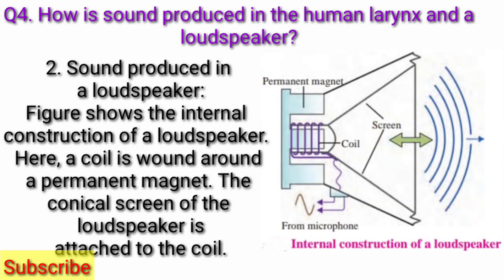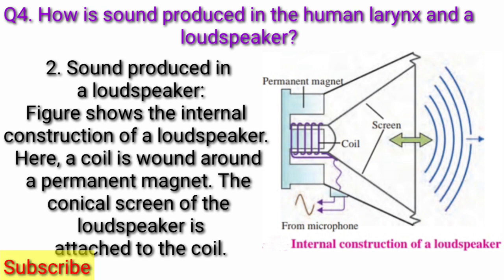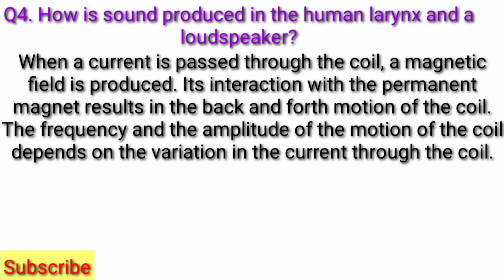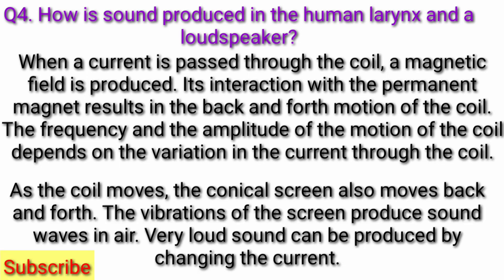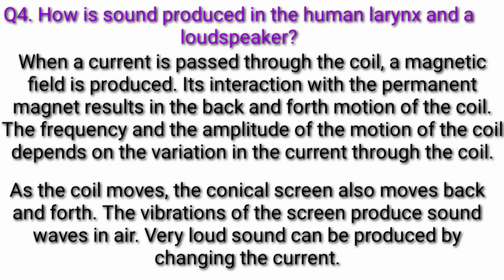Sound produced in a loudspeaker: A figure shows the internal construction of a loudspeaker. A coil is wound around a permanent magnet. The conical screen of the loudspeaker is attached to the coil. When a current is passed through the coil, a magnetic field is produced. Its interaction with the permanent magnet results in the back-and-forth motion of the coil. The frequency and amplitude of the motion of the coil depend on the variation in the current through the coil. As the coil moves, the conical screen also moves back and forth. The vibrations of the screen produce sound waves in air. Very loud sound can be produced by changing the current.